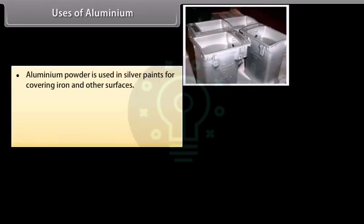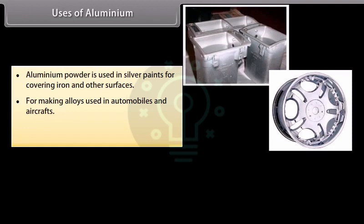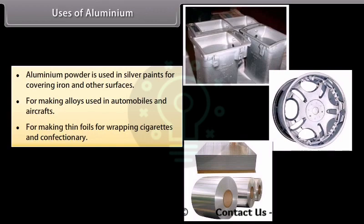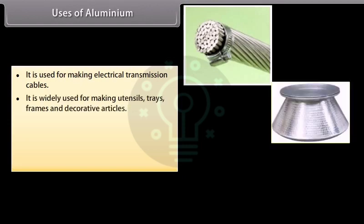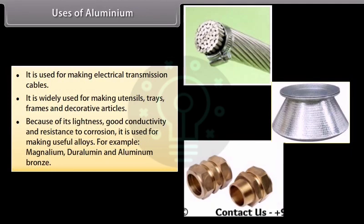Uses of Aluminium. Aluminium powder is used in silver paints for covering iron and other surfaces. For making alloys used in automobiles and aircrafts. For making thin foils for wrapping cigarettes and confectionery. It is used for making electrical transmission cables. It is widely used for making utensils, trays, frames and decorative articles. Because of its lightness, good conductivity and resistance to corrosion, it is used for making useful alloys. For example, magnalium, duralumin and aluminium bronze.